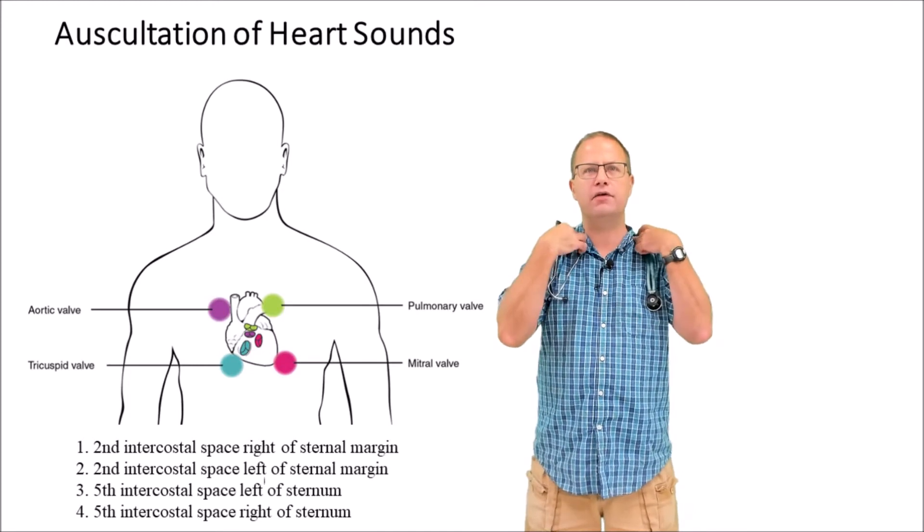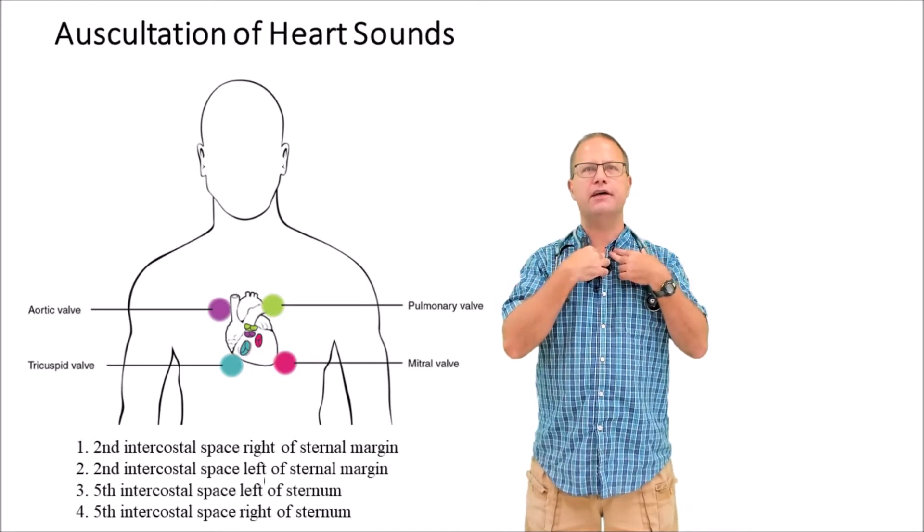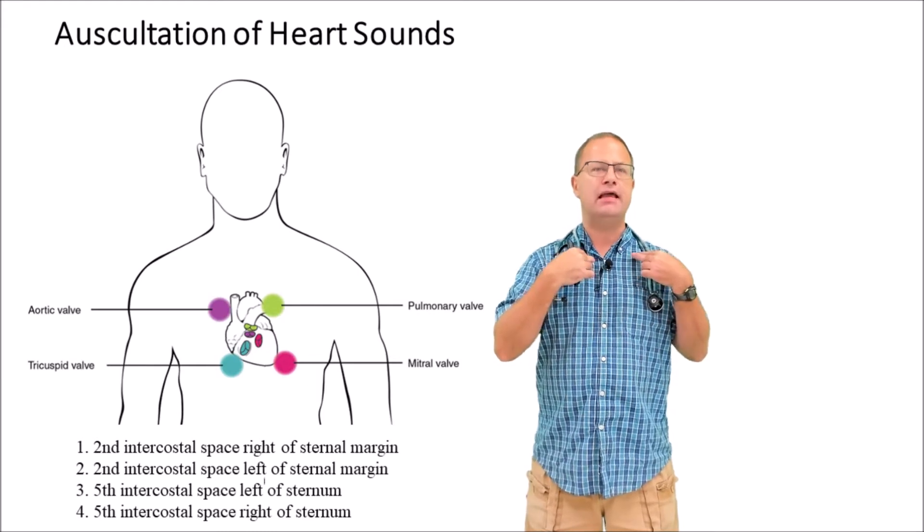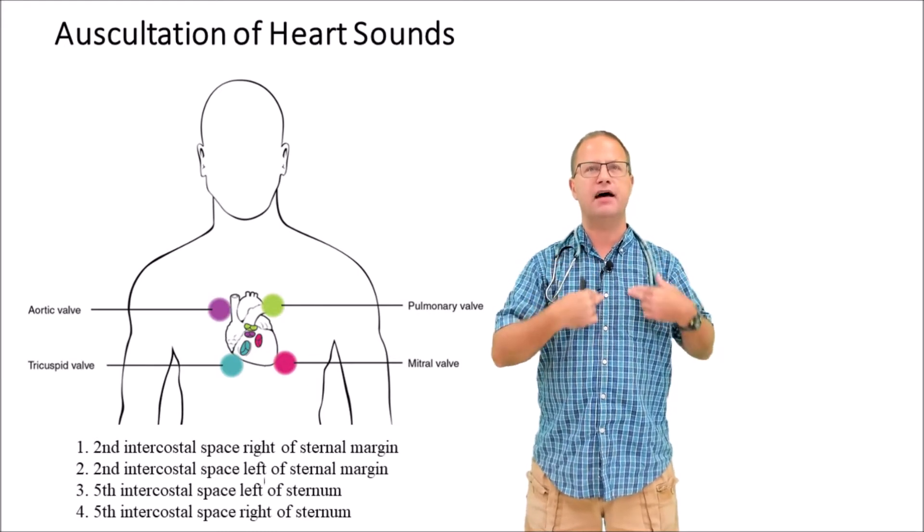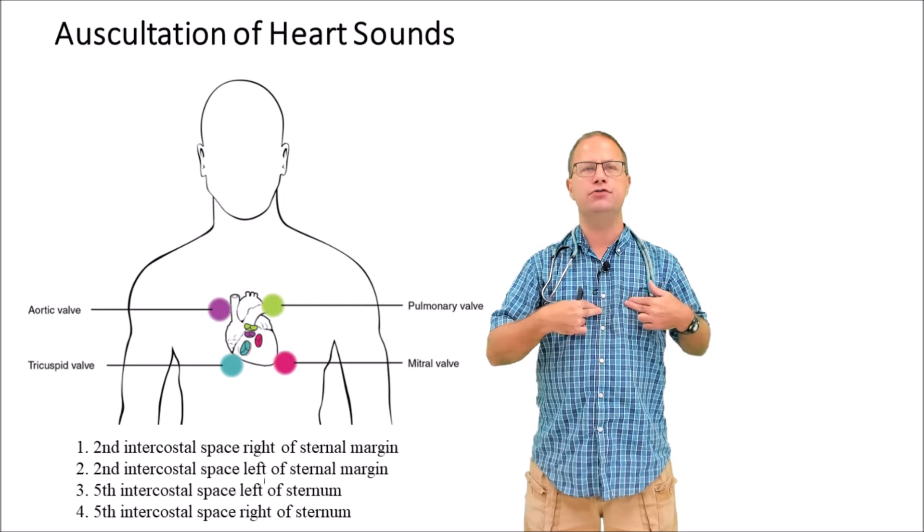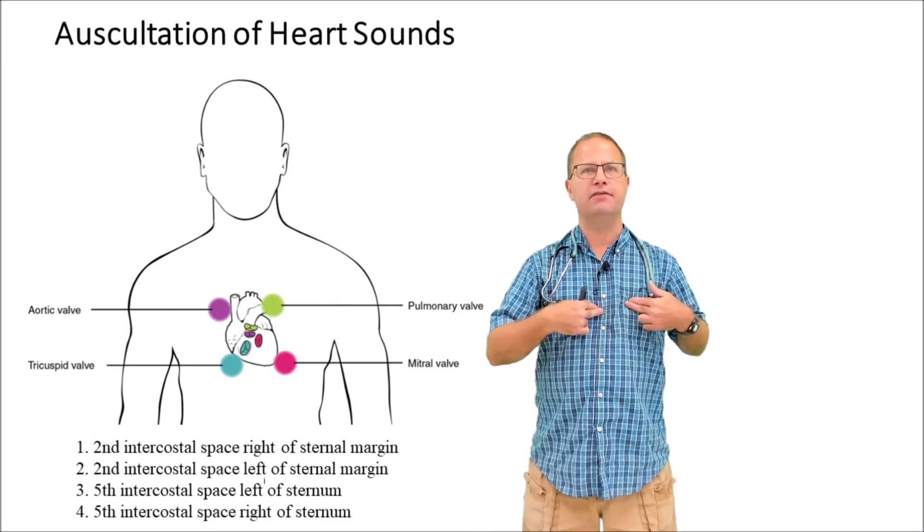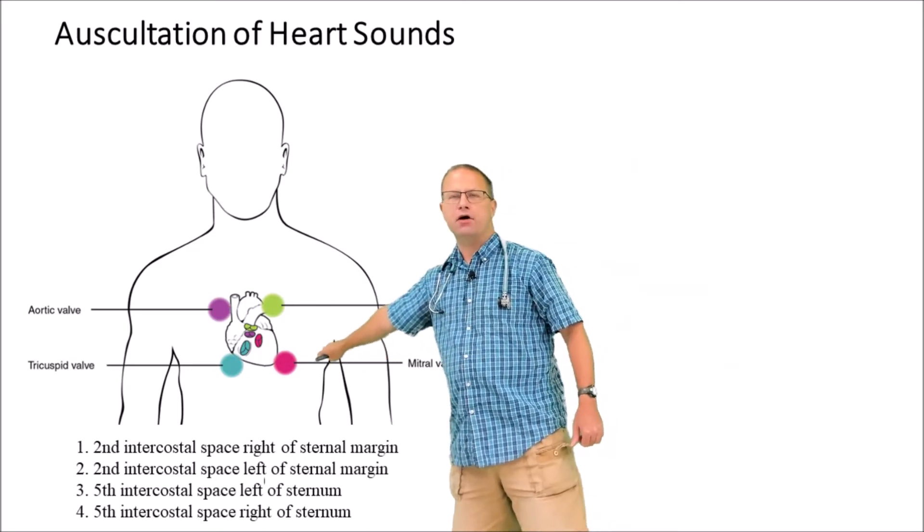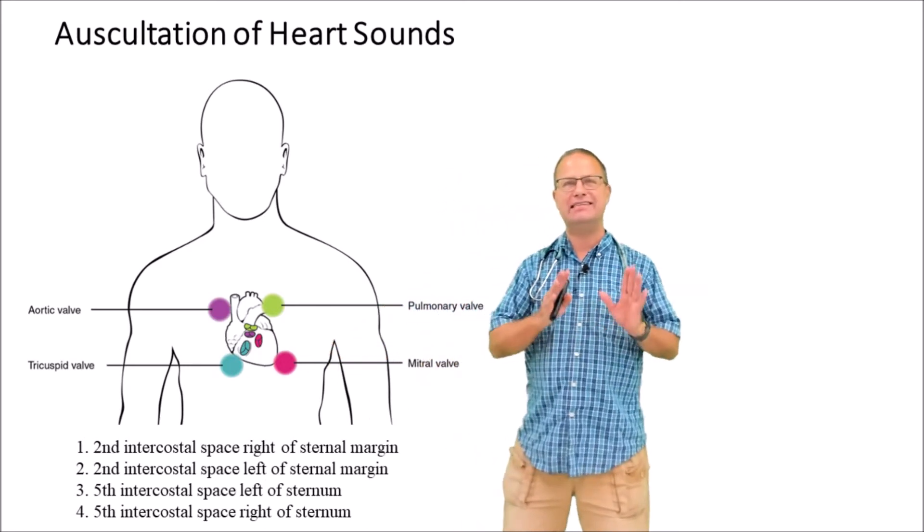You can see those approximate locations listed as intercostal spaces. Find where the clavicles are, follow the clavicle down to the sternum, and then find those spaces where you're going to listen to the semilunar valves up top or the mitral and tricuspid valves below. The mitral one we listen to right down close to the apex of the heart where it has its maximal intensity.